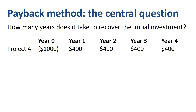Let's calculate the payback period for project A. In year zero, today, we have a cash outflow of $1,000. The brackets around the number indicate that it is a negative, a cash outflow. Over the course of the project, we have $1,600 worth of benefits in total, split evenly over 4 years of $400 each.